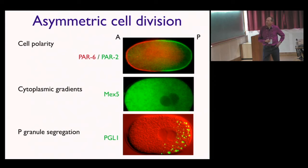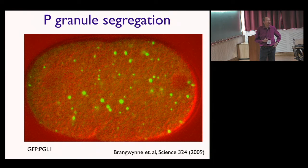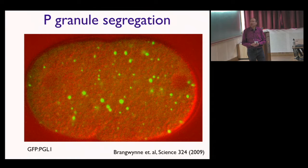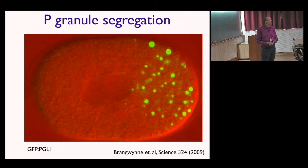Looking at what happens in the cell: the molecule PGL-1 labeled with GFP shows that this protein accumulates in P granules, allowing us to visualize them. Before the cell divides and before things are asymmetric, P granules are everywhere in the cytoplasm. If you follow this during cell division — the process I discussed yesterday — they somehow segregate, and then the cell divides so that only one daughter gets these components.